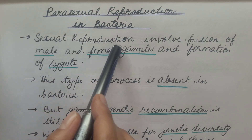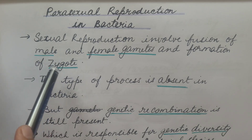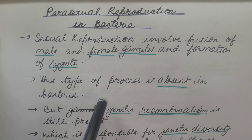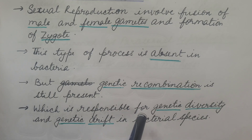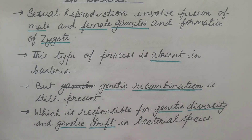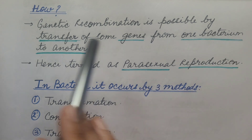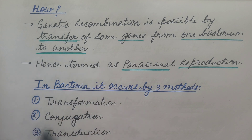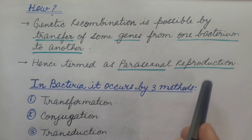Let us see why. Sexual reproduction involves fusion of male and female gametes and formation of a zygote. But this type of process is absent in bacteria. Still, genetic recombination is present, which is responsible for genetic diversity and genetic drift in bacterial species. So how does this genetic recombination occur? Genetic recombination is possible by transfer of some genes from one bacterium to another. Hence, it is not termed as sexual reproduction, but parasexual reproduction.